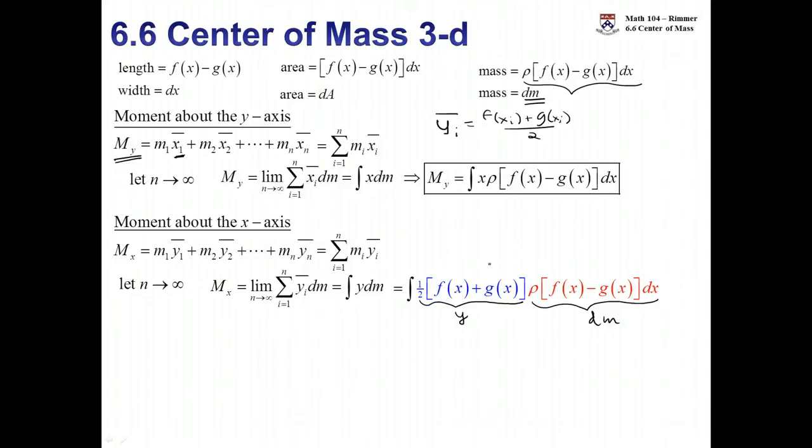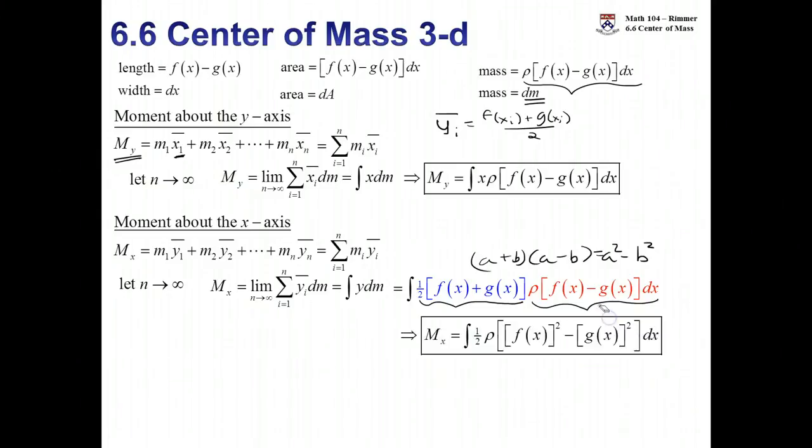That blue expression here is y, and this red expression is dm. Let's take a look at that. If I have f plus g and f minus g, that's like having a plus b and a minus b, it's a squared minus b squared. That's exactly the difference of two squares. We have the difference of squares, f of x squared minus g of x squared. The rho is still in there, the half is still in there, and this is going to be the way you figure out the moment about the x-axis.